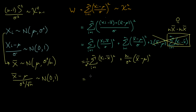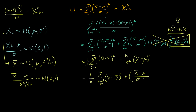We can bring this term inside the brackets as x-bar minus mu divided by sigma over root n, all squared. Because when we pass sigma squared on n through, the root n pops to the top, gets squared, and comes out as n. Notice that x-bar, mu, and sigma don't depend on i, so when we take the sum from i equals one to n of a term that doesn't depend on i, we just get n out the front.